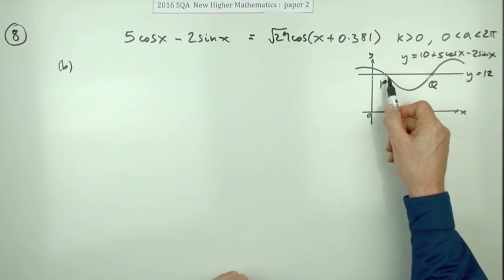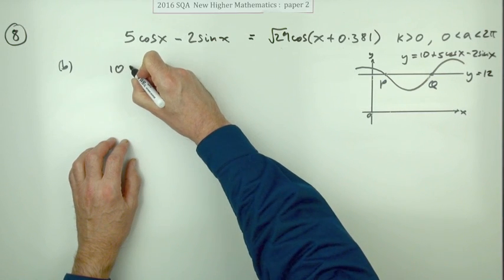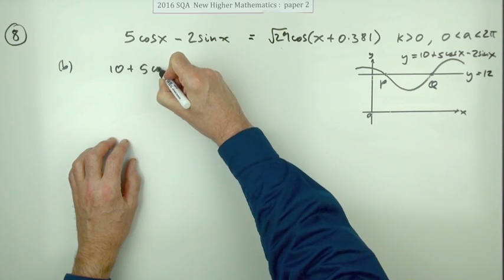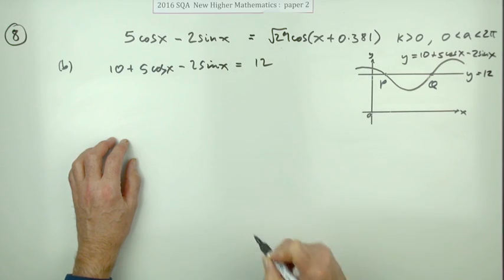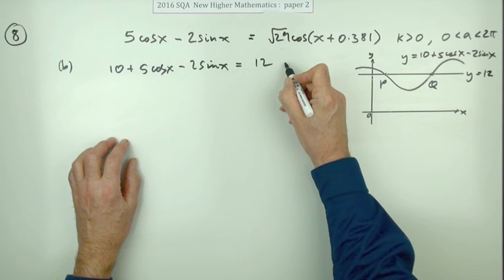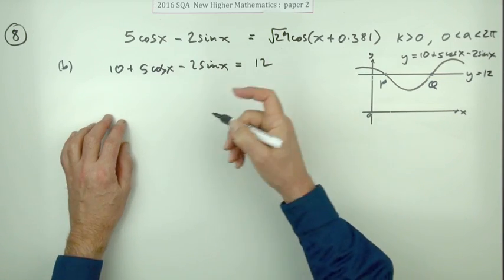Well if they intersect, then obviously at those points the y coordinates will be the same. So you could write this: 10 plus 5 cos x minus 2 sine x should equal 12. Now that doesn't get the first mark until you simplify those, until you start it off. Take the 10 across and subtract.